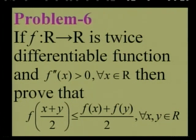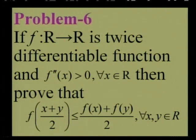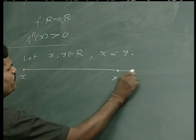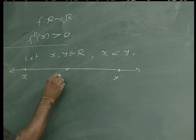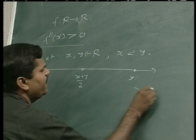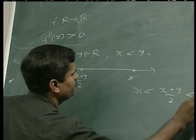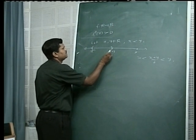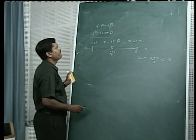Now let us go to the last problem, which is also very interesting. If f is twice differentiable and f''(x) ≥ 0 for every x, then prove that f((x+y)/2) ≤ (f(x) + f(y))/2. Here f is a function from ℝ to ℝ. Let us choose any two elements x, y in ℝ and suppose x < y. We know that (x+y)/2 always lies between x and y, that is x < (x+y)/2 < y, giving us two intervals: [x, (x+y)/2] and [(x+y)/2, y].